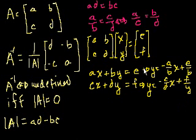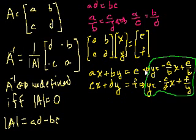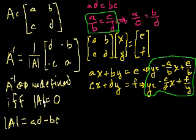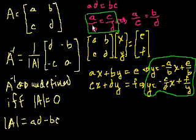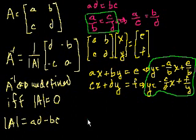Let's think about what these two equations look like when the singular condition holds — when there is no determinant and the matrix is singular with no inverse. If A over B equals C over D, then these two lines will have the same slope. So if the y-intercepts are different, two lines with the same slope and different y-intercepts are parallel to each other and will never, ever intersect.